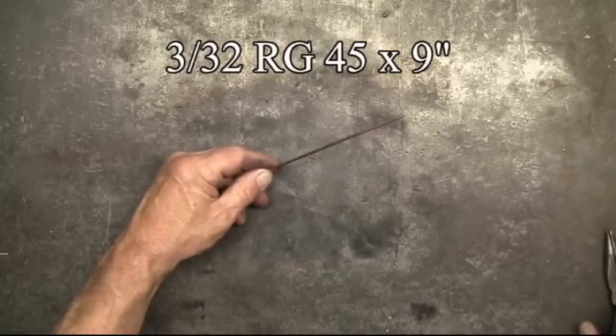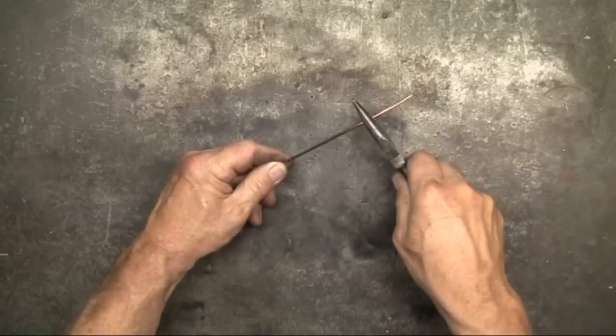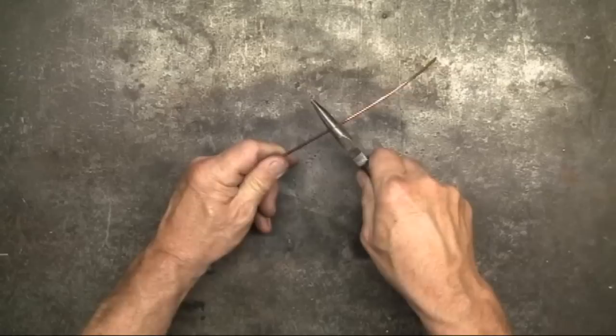For attaching the leaves, I'll need some branches. These are 9 inch pieces of 3/32nd RG45. RG45 is a mild steel gas welding rod. This is steel with a thin copper sheath.